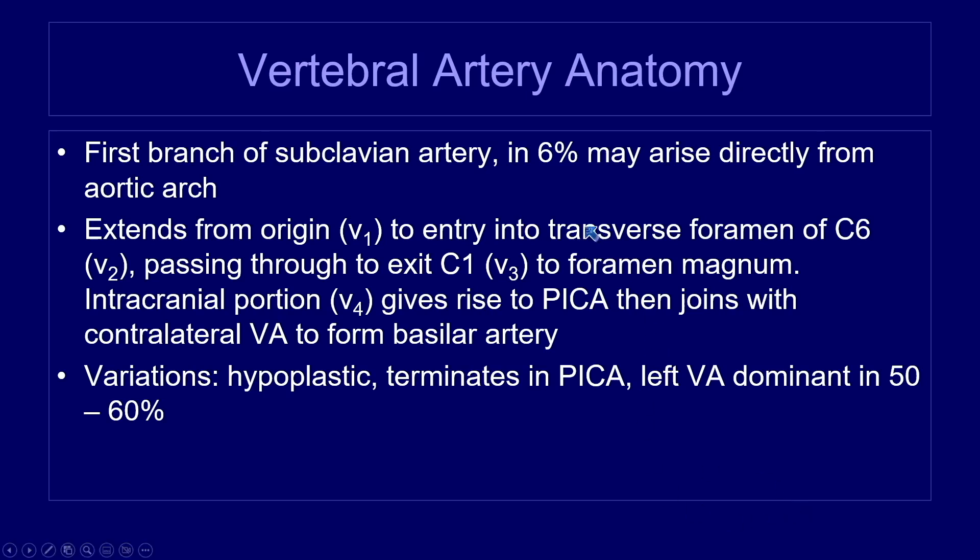The vertebral artery comes up through the spine — that's where we image it in between the bones — eventually coming through the foramen magnum, giving rise to PICA branches, and then joining with the contralateral vertebral artery to form the basilar artery. It is this connection above that is so important to what happens to vertebral artery waveforms when there are problems in the other great vessels.